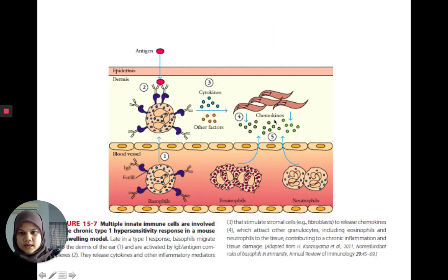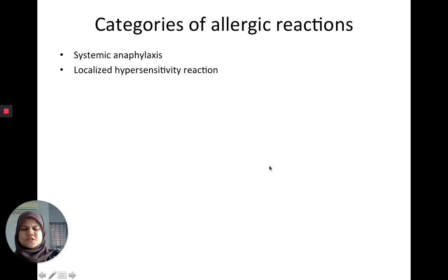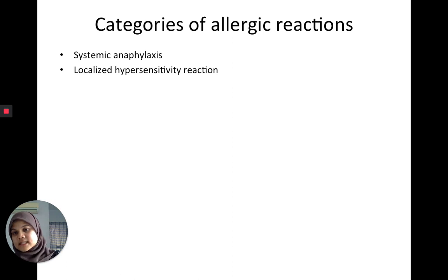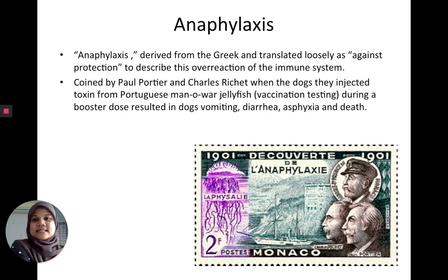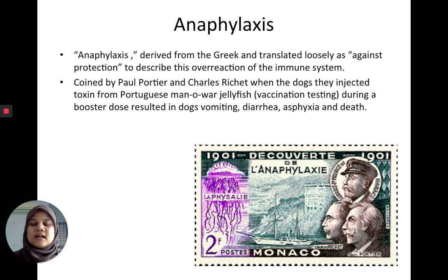This schematic shows how multiple immune cells are involved in chronic type 1 hypersensitivity. The categories of allergic reactions include two main ones: systemic anaphylaxis and localized hypersensitive reactions. Anaphylaxis is probably the worst kind of type 1 hypersensitivity — translated from Greek as 'against protection' — and describes the overreaction of the immune system.